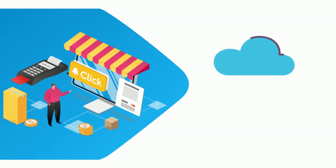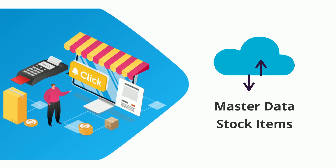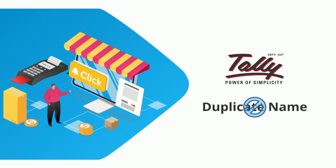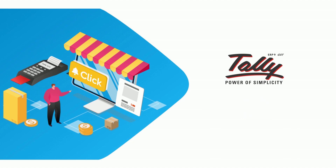Once all the master data is uploaded, the stock items will be uploaded last. The product master details will be updated in Tally. Since Tally does not allow duplicates, the product name and its respective item code must be unique. Even if the product has the same barcode as the product name, Tally will not accept it while importing the data.